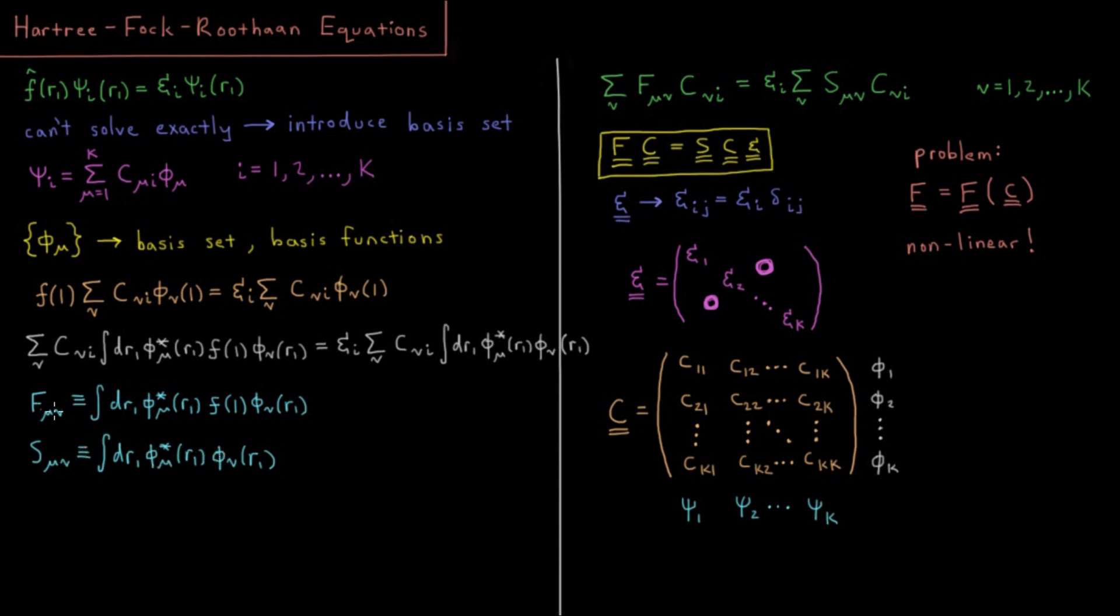Substituting in these definitions for these matrix elements into these Hartree-Fock equations, we get sum over nu F mu nu C nu i equals epsilon i sum over nu S mu nu C nu i. This is true for all values of nu, which are equal to sum from nu equals one up to k, and this is true for all values of mu, also equal from one to k.